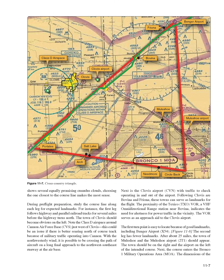The town of Clovis should become obvious on the left. Note the Class D airspace around Cannon Air Force Base (CVS) just west of Clovis, which could be an issue if soaring north of course due to military traffic. Next is Clovis Airport (CVN), then Bovina and Friona as landmarks. The proximity of the Texaco VOR (TXO) near Bovina indicates a need for alertness for powered traffic in the vicinity. The first turnpoint is easy to locate because of good landmarks, including Benger Airport (X54).